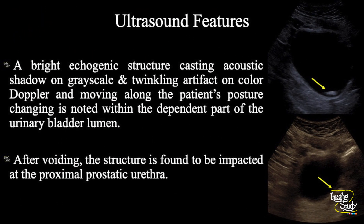In summary, a bright echogenic structure casting acoustic shadow on grayscale and twinkling artifact on color Doppler, and moving with changes in patient posture, is noted within the dependent part of the urinary bladder lumen. After voiding, the structure is found to be impacted at the proximal prostatic urethra. These features conclude this as a case of vesical calculus which got impacted at the prostatic urethra during voiding.